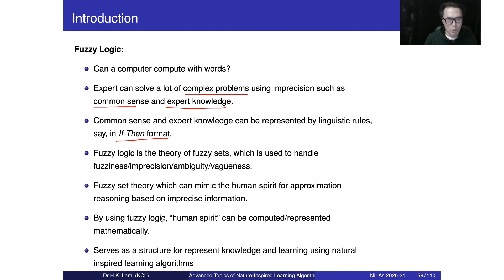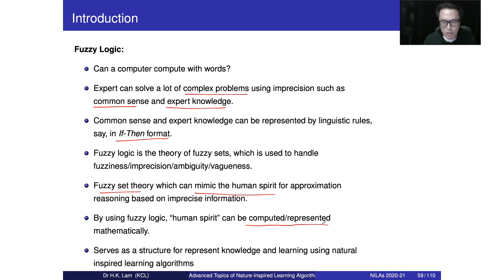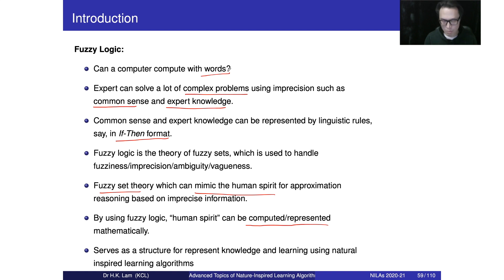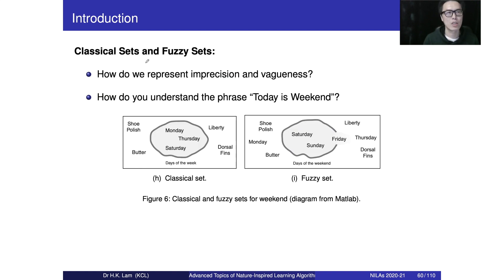We can use the fuzzy set theorem to mimic human intelligence. In that case, we can make knowledge computable — that is, we can compute with words using fuzzy logic. That means we can use a computer to implement the fuzzy logic system. The fuzzy logic system is something like our brain. Now let's take a look at what would be the classical set as well as the fuzzy set.